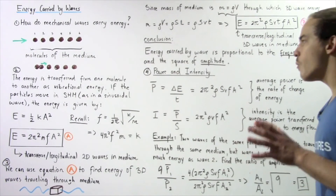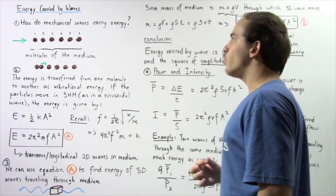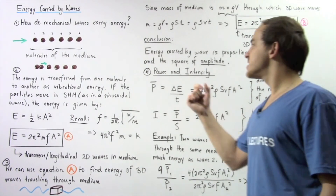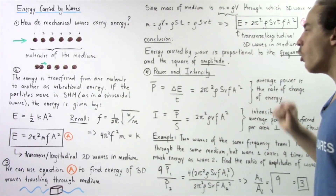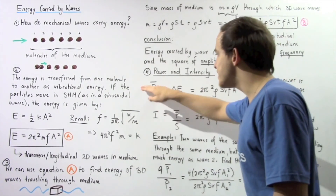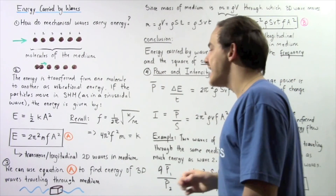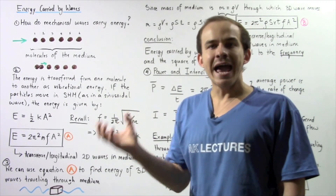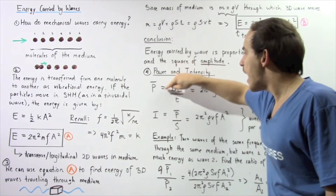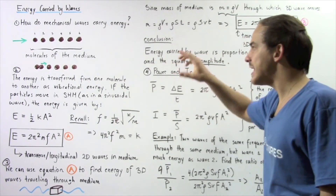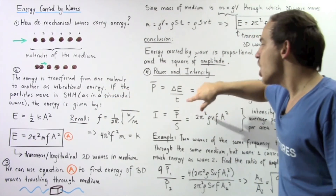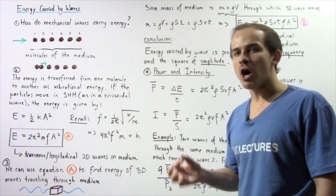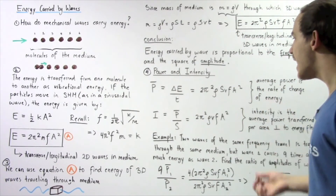Let's define two more important physical quantities when discussing energy and wave motion: power and intensity. Power, given by average power, equals the change in energy divided by time — how much energy is transferred as the wave propagates over a given time period. This gives us the rate of change of energy per unit time.